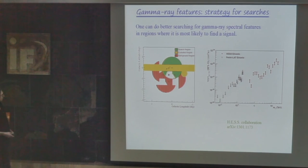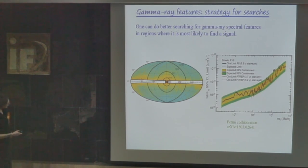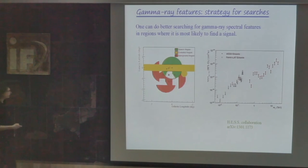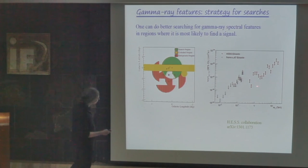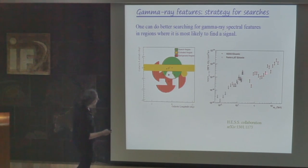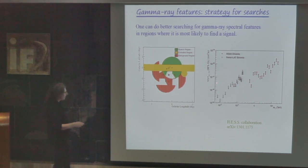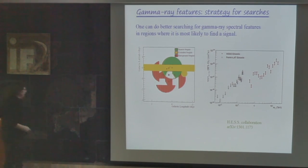The search has been extended to larger energies. For Cherenkov telescopes this is much more complicated. These are the limits produced by the HESS collaboration, which have been improved further. The limits released by the Fermi collaboration are of a similar order or even better.